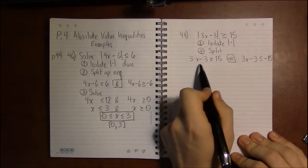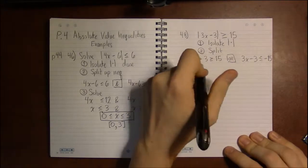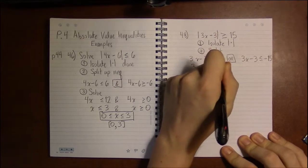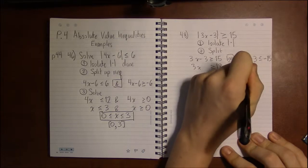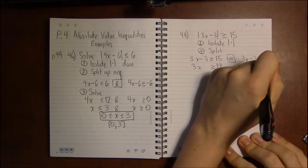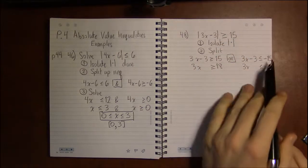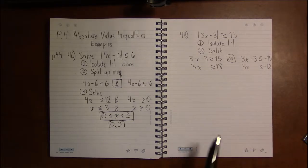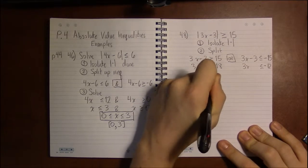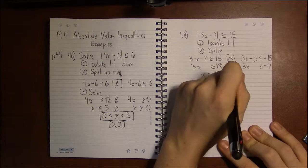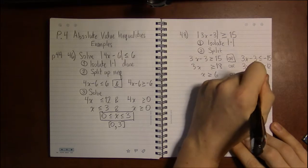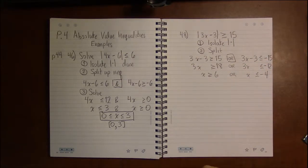We'll be adding 3 to both sides of both equations to get 3x is greater than or equal to 18. For the second equation, we get 3x is less than or equal to minus 12. Minus 15 plus 3 is minus 12. Dividing 18 by 3 leaves us with 6, and dividing minus 12 by 3 leaves us with minus 4.